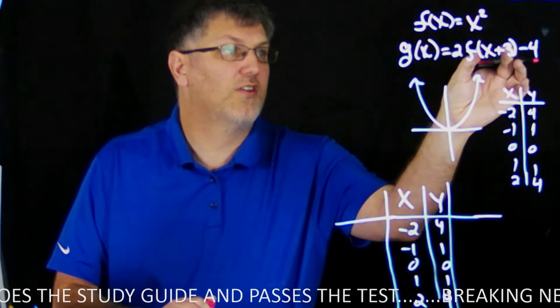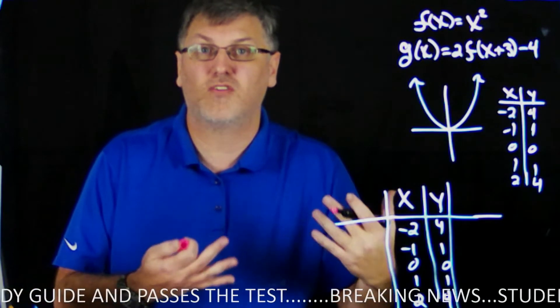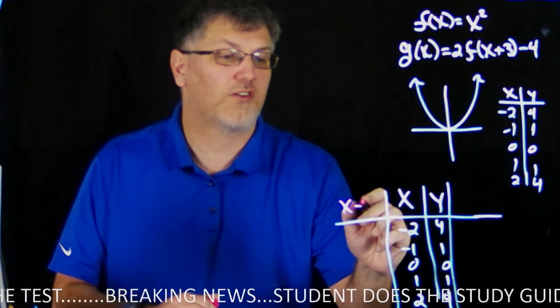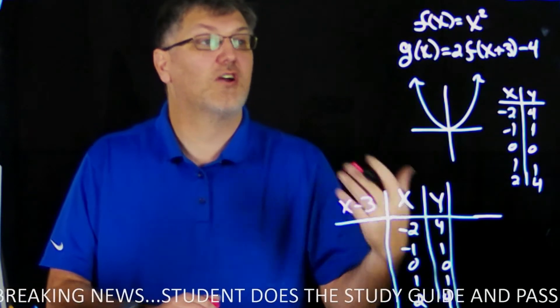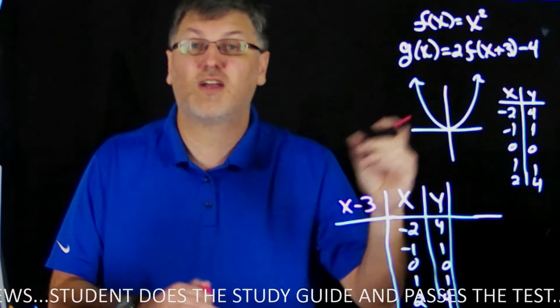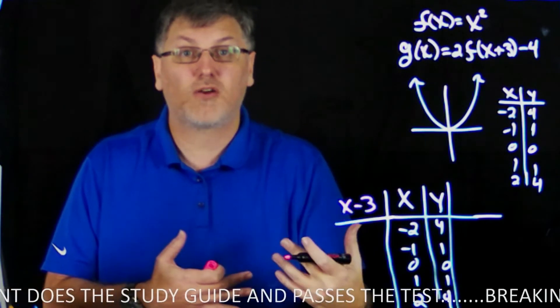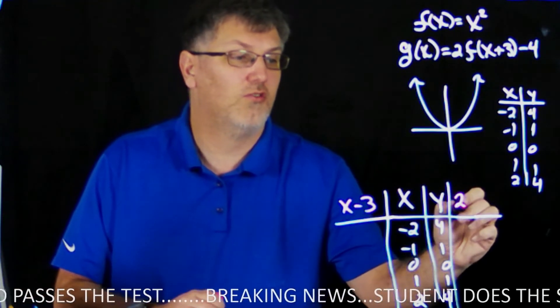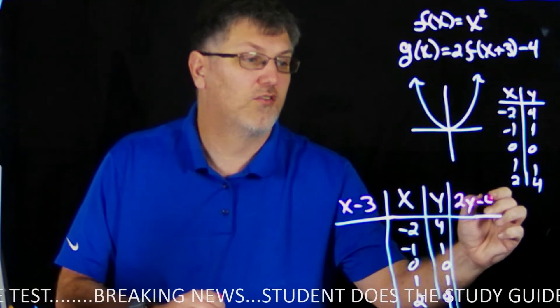And here is where we do our transformation. We're going to look. Everything on the inside affects the x's, but it's the opposite sign. It's counterintuitive. So since this is x+3, we're going to do x-3. Everything on the outside, outside of this f(x), affects my y's. We're not going to change any values or flip anything around. This is 2 times the y value. So we're going to do 2y - 4.